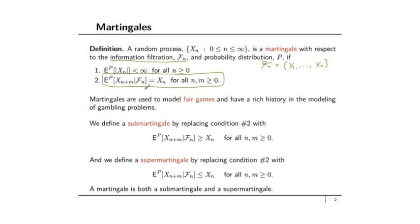Returning to condition 2, what this is really saying is that the expected value of X at any time in the future is equal to its current value today. Martingales have often been used to model what are called fair games — they've got a rich history in gambling — because this condition models the idea of a fair game: your expected future payoff is equal to your current wealth Xn. We define a submartingale by replacing condition 2 with a greater than or equal to sign, and a supermartingale by replacing it with a less than or equal to sign. A martingale is both a submartingale and a supermartingale.